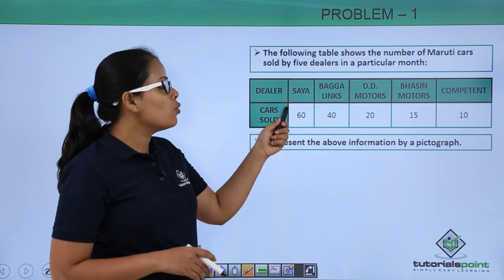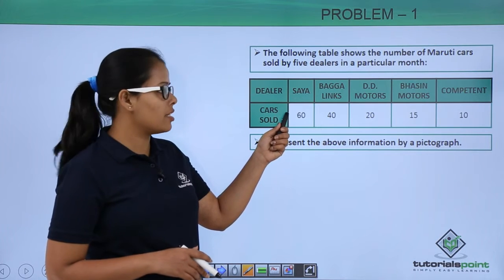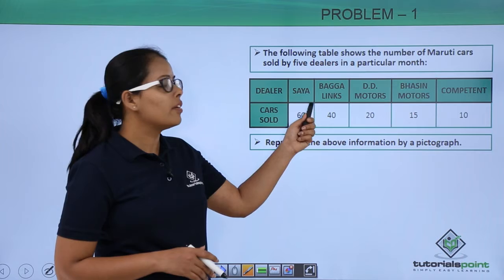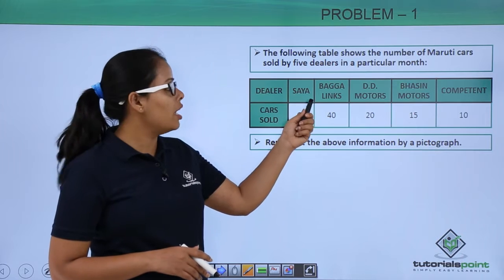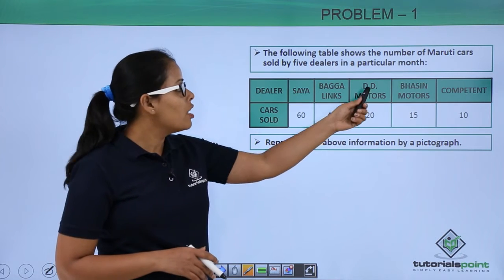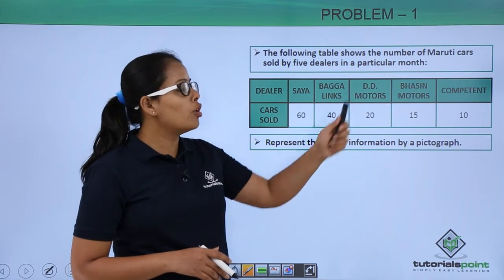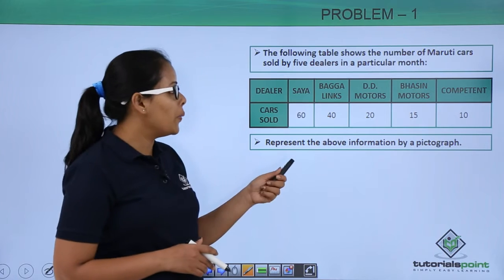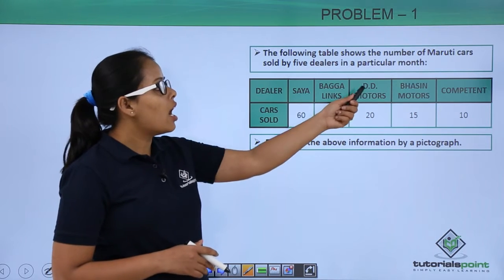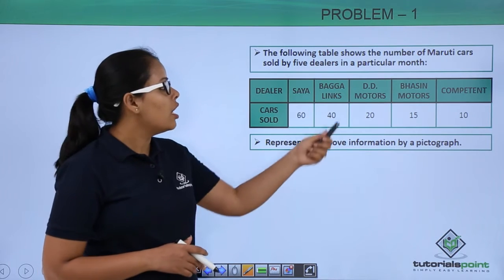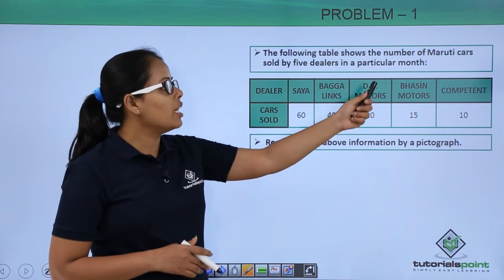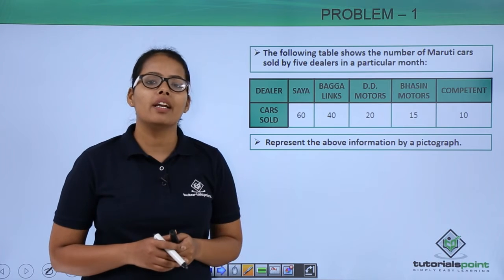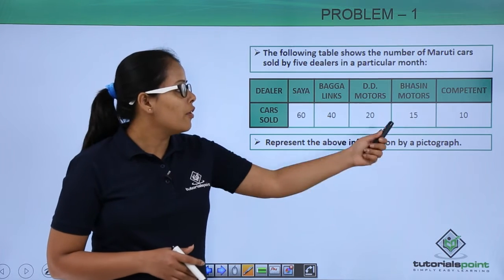Cars sold by Sia are 60, cars sold by Bagga Links are 40, cars sold by DD Motors are 20, cars sold by Basin Motors are 15, and cars sold by Competent is 10.